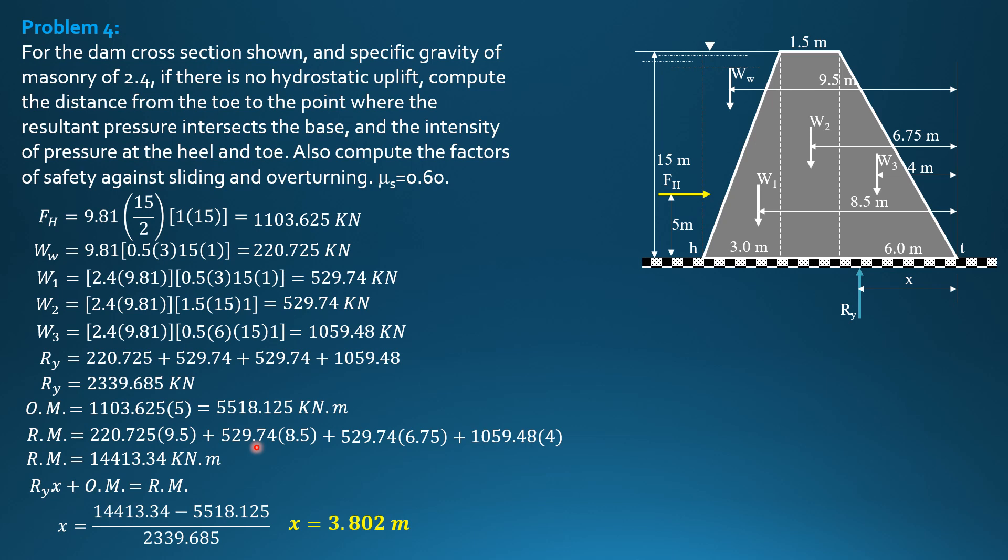Since it is greater than B over 3 or 10.5 over 3, so 10.5 over 3 is less than X and X is less than 10.5 over 2. That's a good design. RY intersects the middle thirds somewhere in the middle thirds or between the center and the extremity of the middle third nearer the toe. That's a good design.